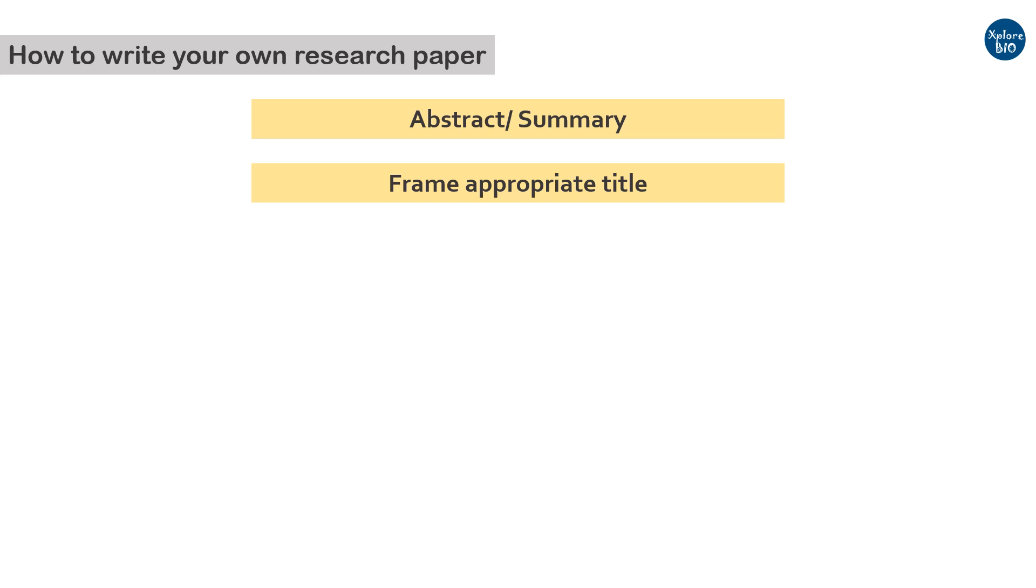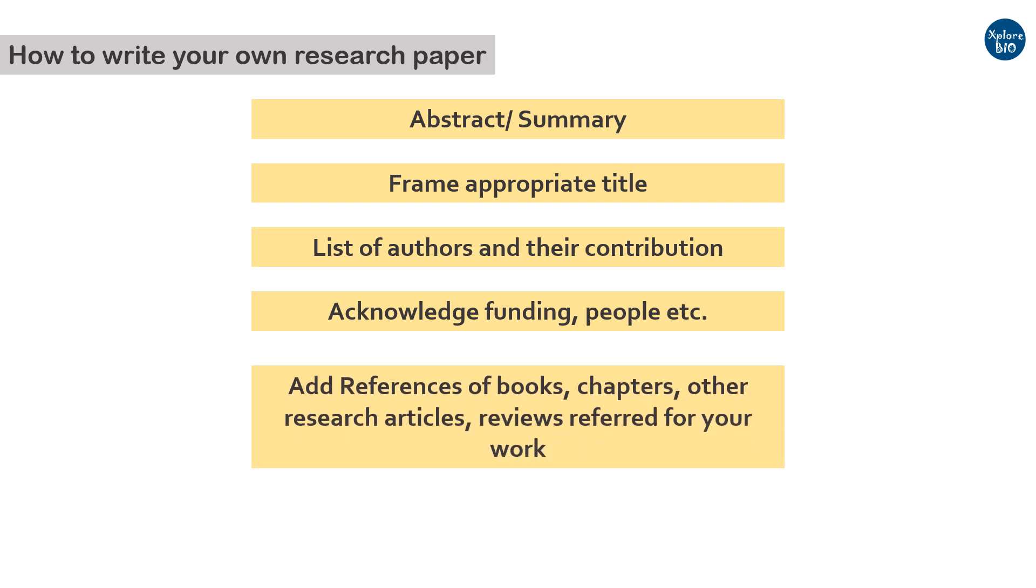Based on the contribution of the individual authors, a list of authors and their affiliations are added. Funding and minor contributions are acknowledged in the acknowledgement section. References include the research articles, reviews, books or the chapters that were referred or cited in this paper. You may use reference managers like Mandley or the EndNote for automatic formatting of the references. It saves a lot of time.